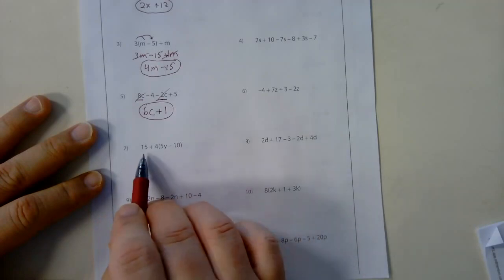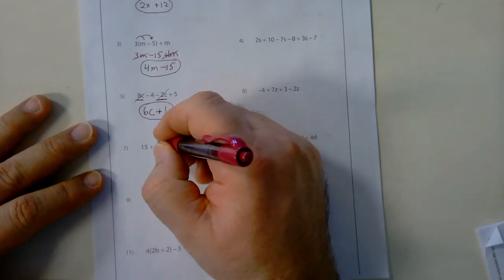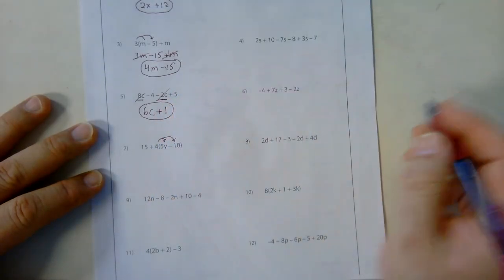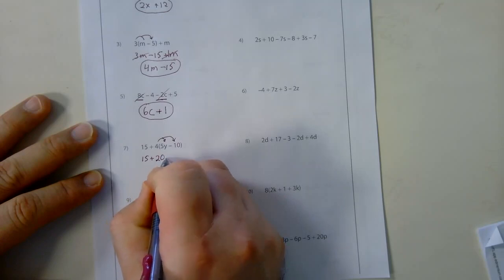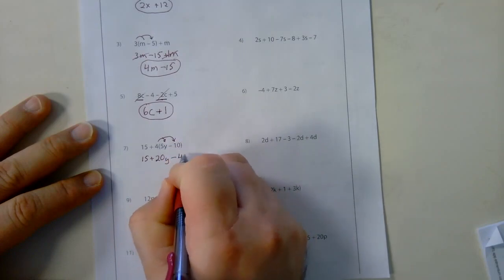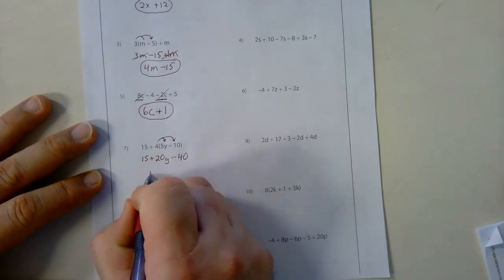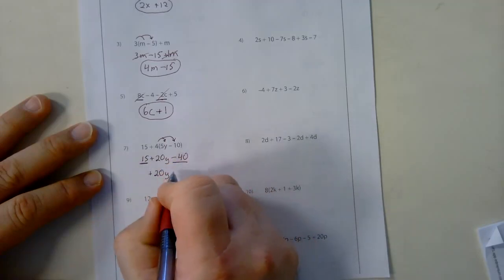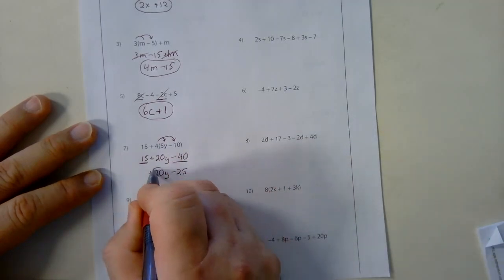Number 7. We have 15 plus 4 parentheses, 5y minus 10. Again, notice the parentheses. So I'm going to distribute the 4 to the 5y and the 4 to the minus 10. Start out with 15 first. Plus 4 times 5 is 20. Remember to include your variable y. Minus 4 times 10 is 40. Now go through. Find the variables first. All I have is a positive 20y. So I'll put that out front. And then I have 15 minus 40. That gives us minus 25 when I put those two terms together. And there is my final answer.